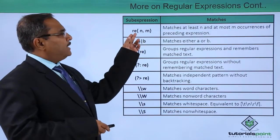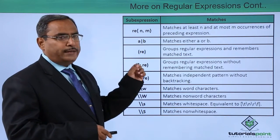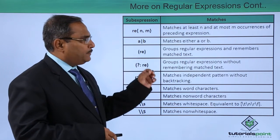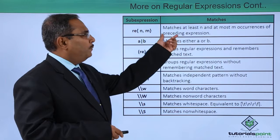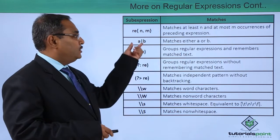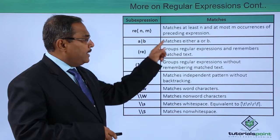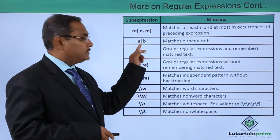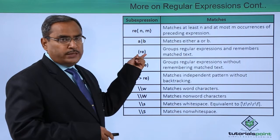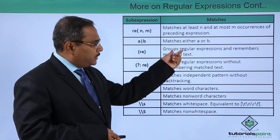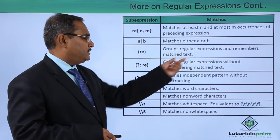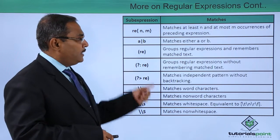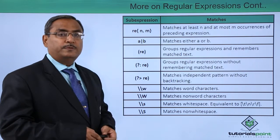`re{n,m}` — with n and m written inside curly braces — matches at least n and at most m occurrences of the preceding expression. `a|b` matches either a or b, which is written using the pipe character. `(re)` within parentheses groups the regular expression and remembers the matched text. Other options are available and can be read with their respective matches.